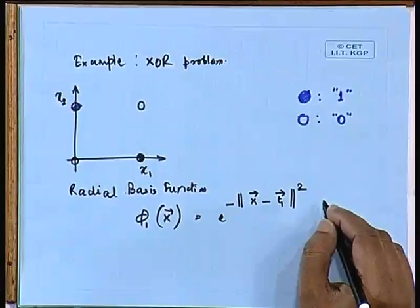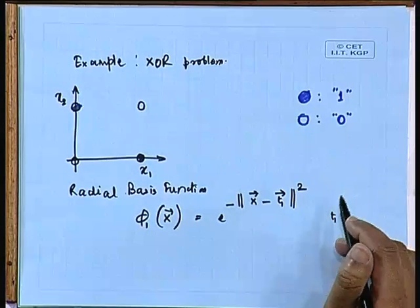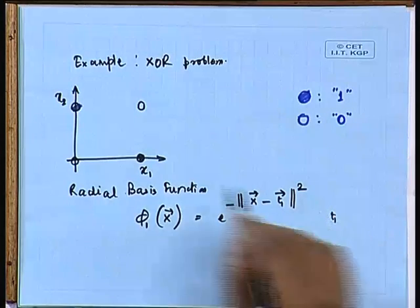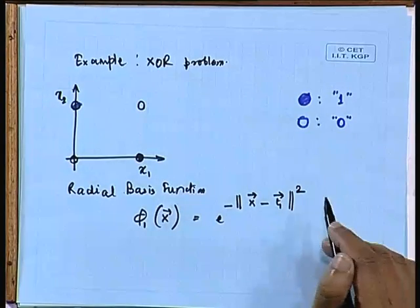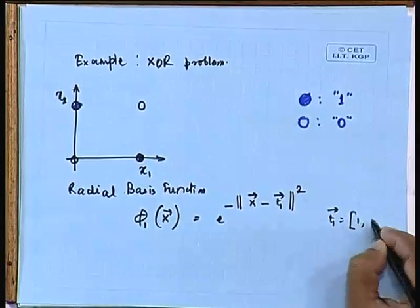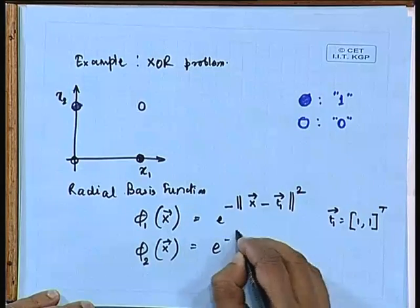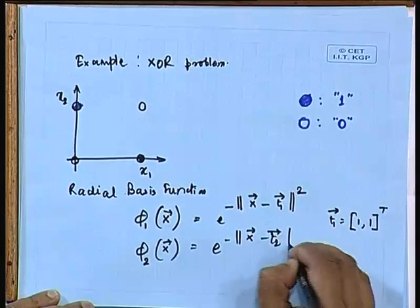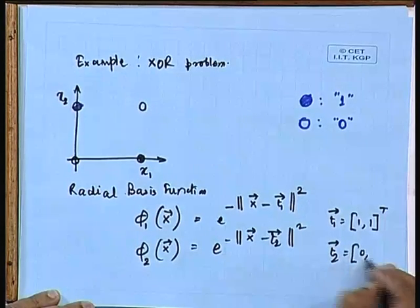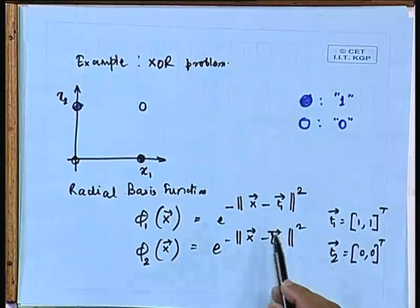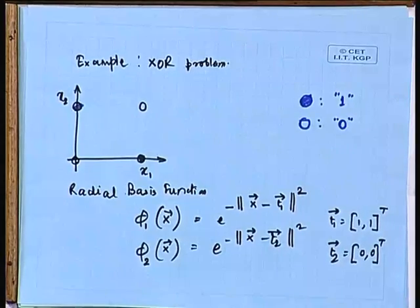T1 is nothing but the center of the Gaussian function. We take T1 centered around two of the patterns giving class 0. We take T1 vector equal to (1,1) and likewise take another radial basis function phi2(x) equal to e to the power of negative norm of (x minus T2) squared, where T2 is defined to be (0,0). So these are the two centers around which we have defined the radial basis functions, and we consider only two — dimensionality remains as 2.